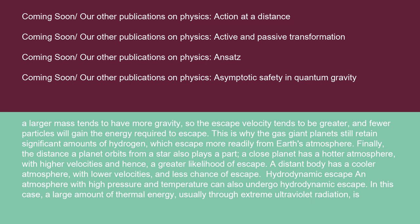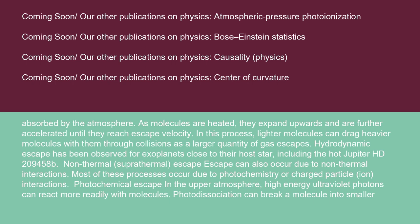An atmosphere with high pressure and temperature can also undergo hydrodynamic escape. In this case, a large amount of thermal energy, usually through extreme ultraviolet radiation, is absorbed by the atmosphere. As molecules are heated, they expand upwards and are further accelerated until they reach escape velocity. In this process, lighter molecules can drag heavier molecules with them through collisions as a larger quantity of gas escapes. Hydrodynamic escape has been observed for exoplanets close to their host star, including the hot Jupiter HD 209458b.